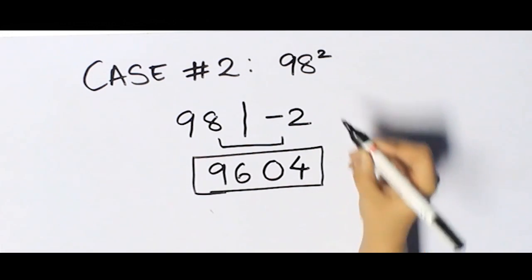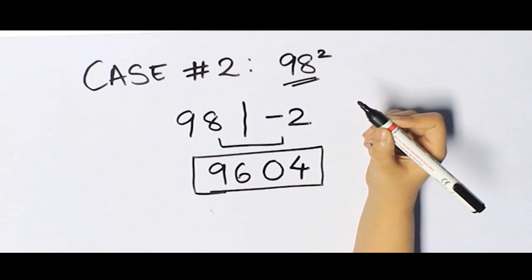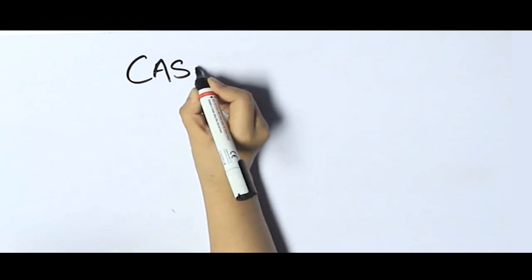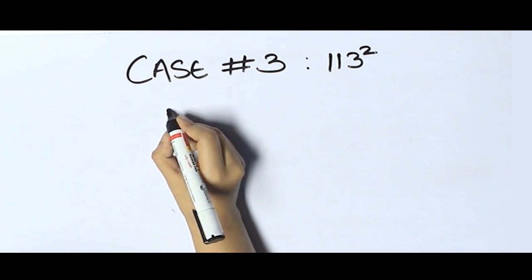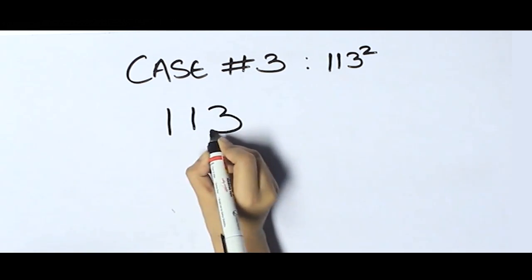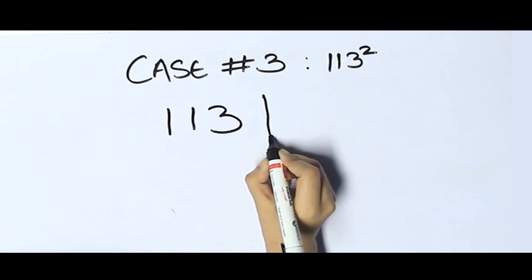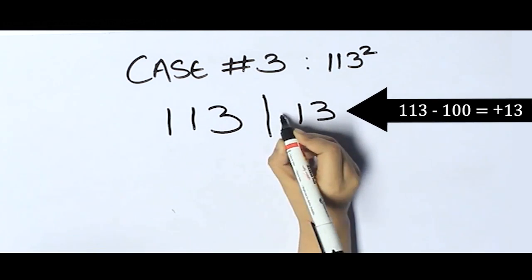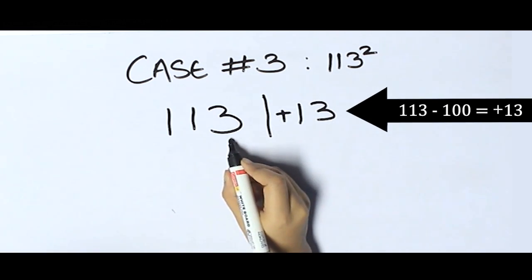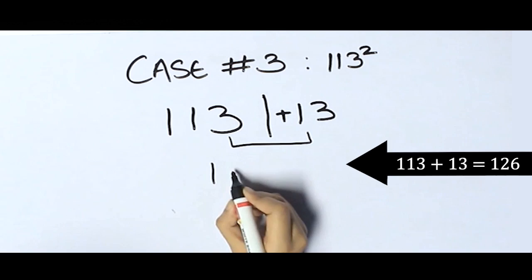Case three: 113 squared. For this, we'll write the original number, that is 113. This number is 13 more than 100. On adding these two, we'll get 126.